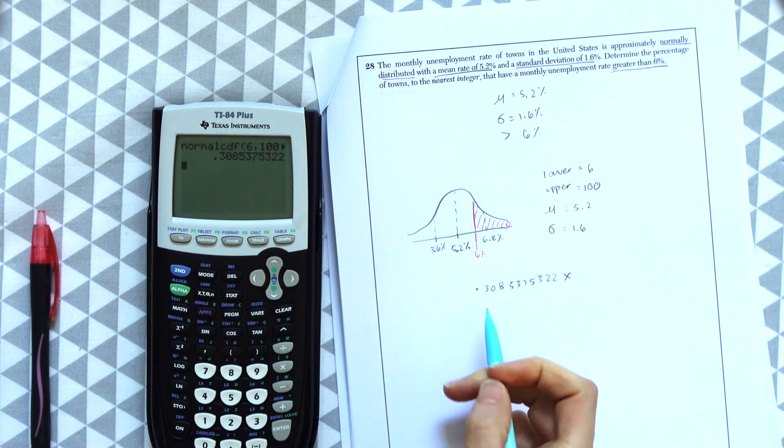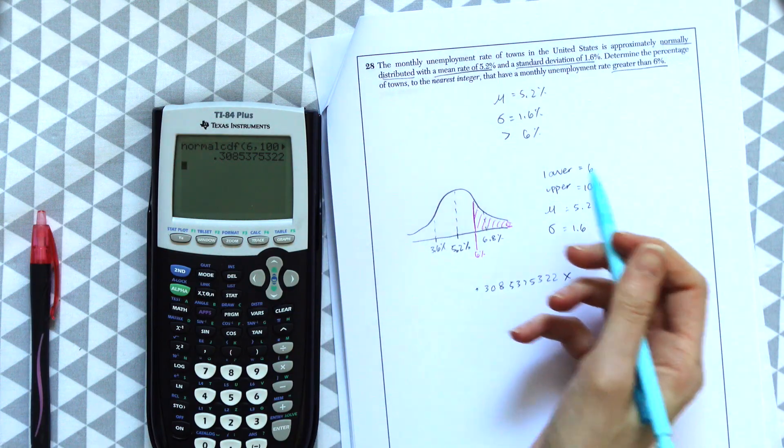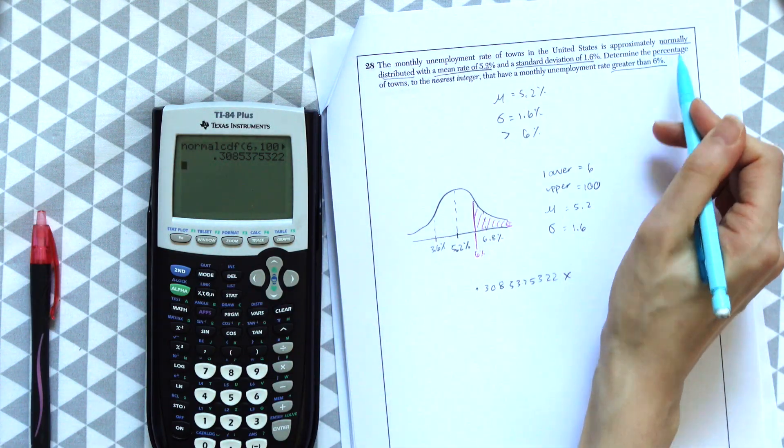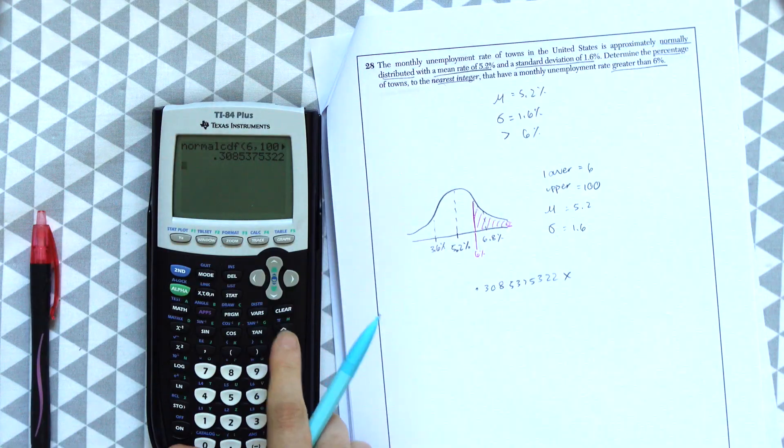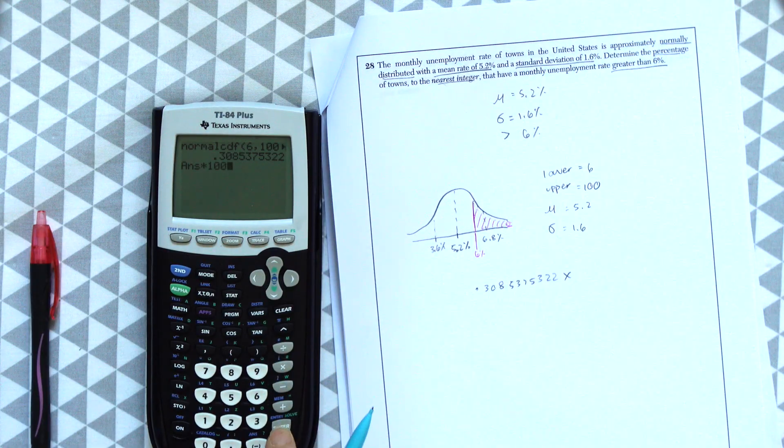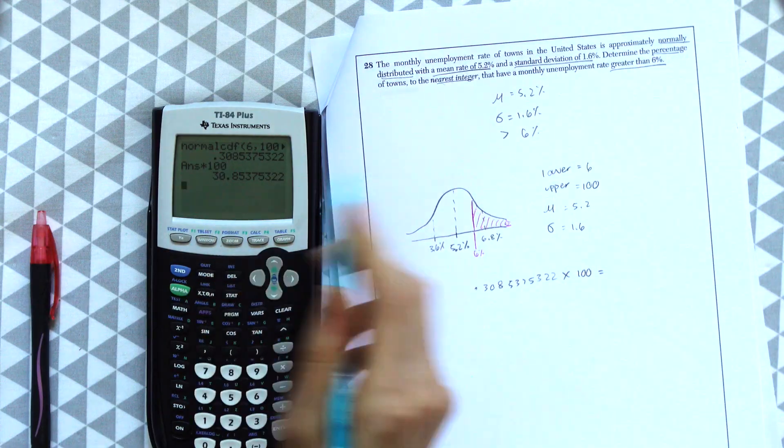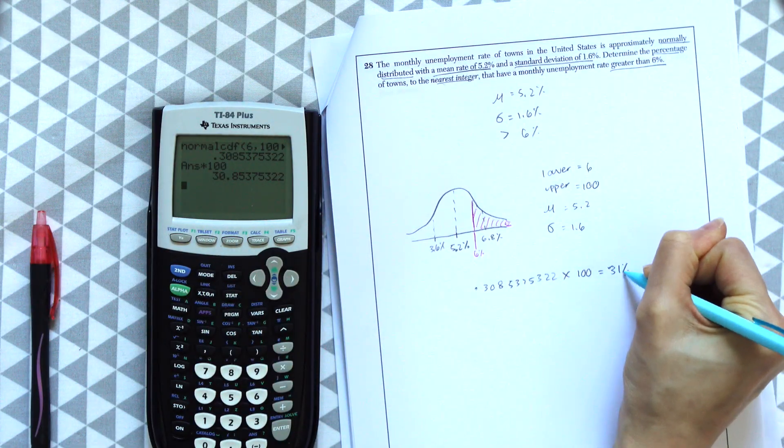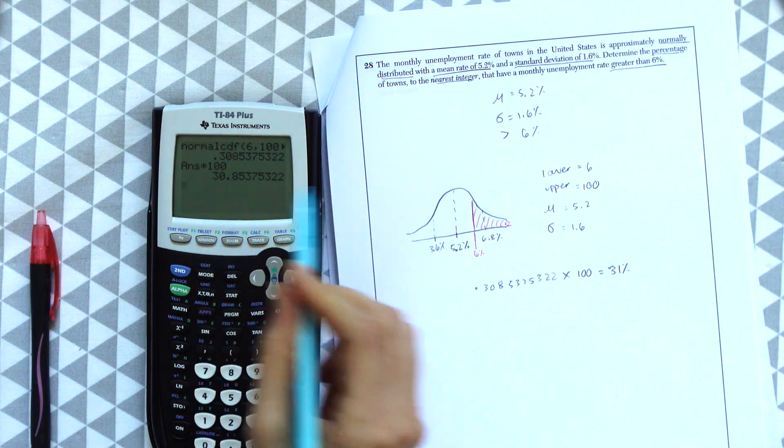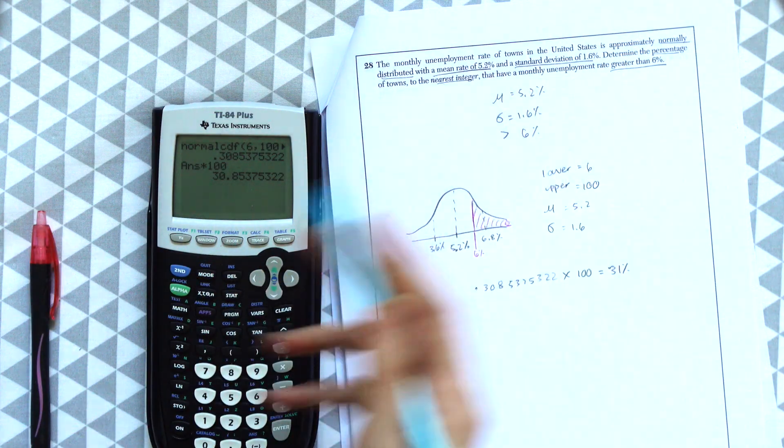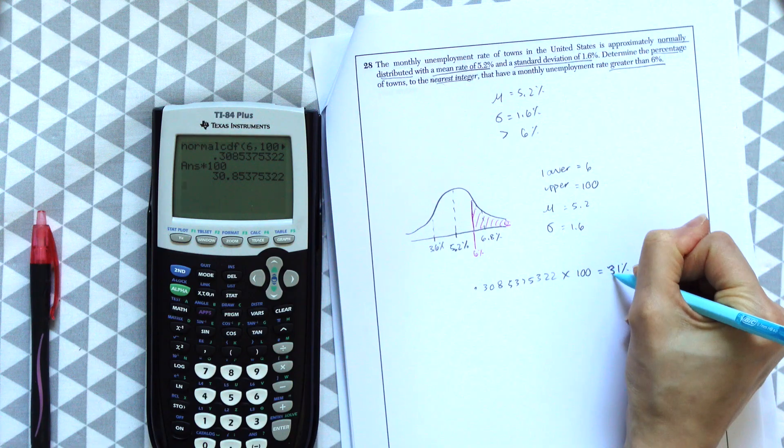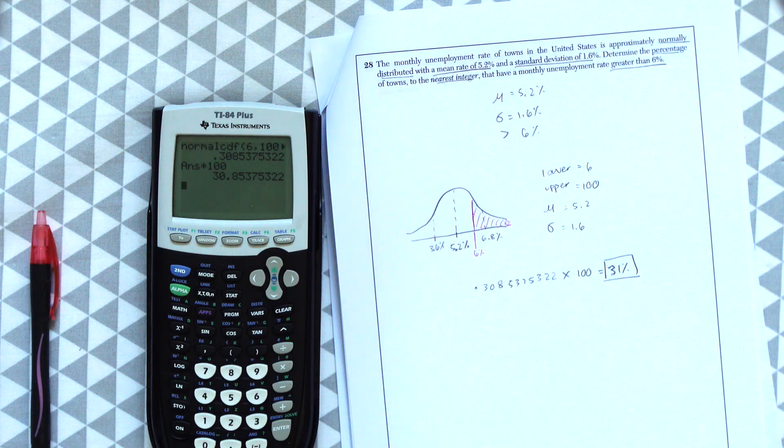And what we're going to do with that is that's a decimal, but they want a percentage to the nearest integer. So we're going to multiply this number times 100 to get a percentage. And we do that to the nearest integer, we're going to get 31%. They want it to the nearest integer, so we're just going to round up and we get 31%, which is our answer.